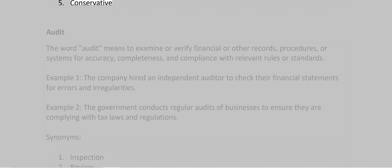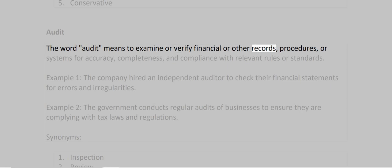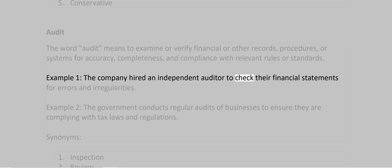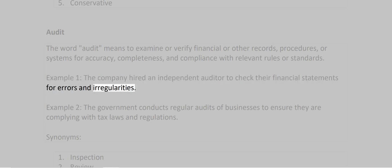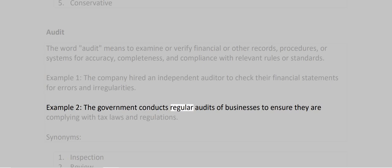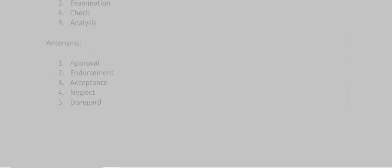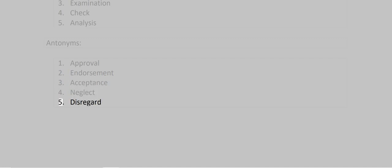Audit. The word audit means to examine or verify financial or other records, procedures, or systems for accuracy, completeness, and compliance with relevant rules or standards. Example 1: The company hired an independent auditor to check their financial statements for errors and irregularities. Example 2: The government conducts regular audits of businesses to ensure they are complying with tax laws and regulations. Synonyms: 1. Inspection 2. Review 3. Examination 4. Check 5. Analysis. Antonyms: 1. Approval 2. Endorsement 3. Acceptance 4. Neglect 5. Disregard.